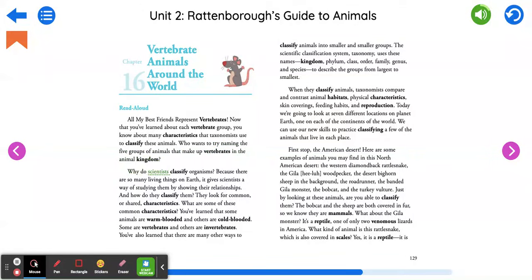Who wants to try naming the five groups of animals that make up vertebrates in the animal kingdom? Why do scientists classify organisms? Because there are so many living things on Earth, it gives scientists a way of studying them by showing their relationships.